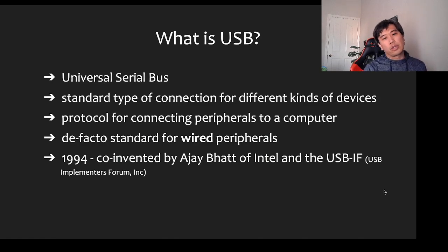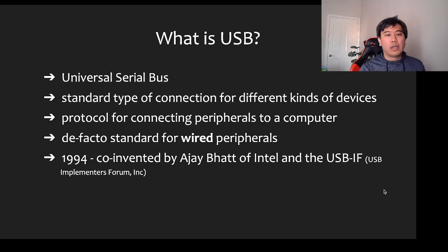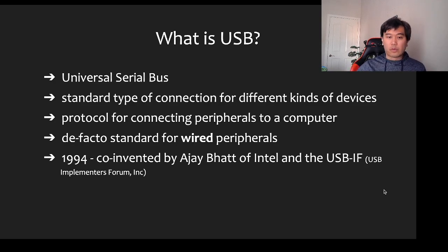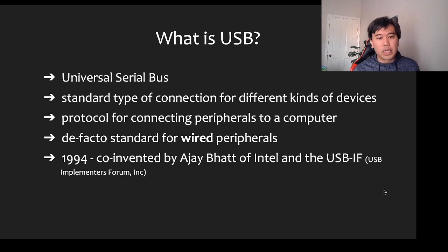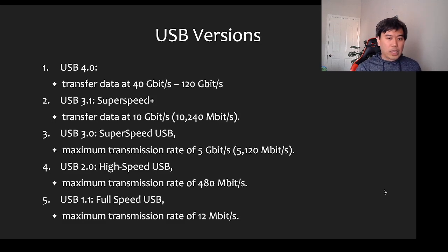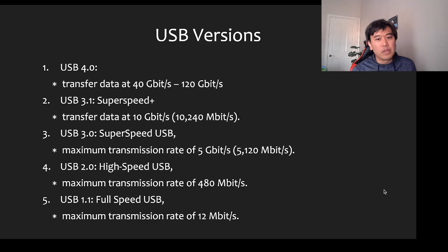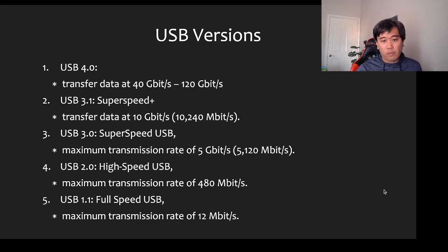USB — Universal Serial Bus — is a standard for connecting different kinds of wired peripherals. It became a de facto standard and was co-invented back in 1994 by Intel and the USB Implementers Forum. The latest version is USB 4, which can transfer data up to 40 gigabits per second — and 20 gigabits before that.